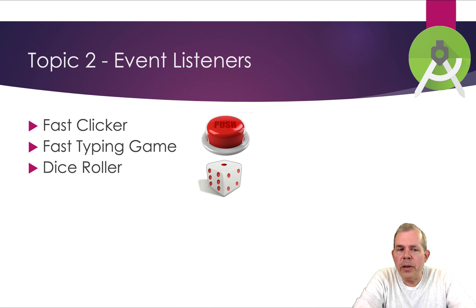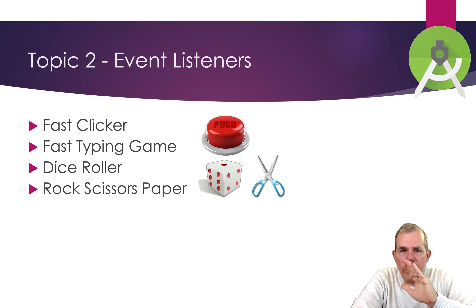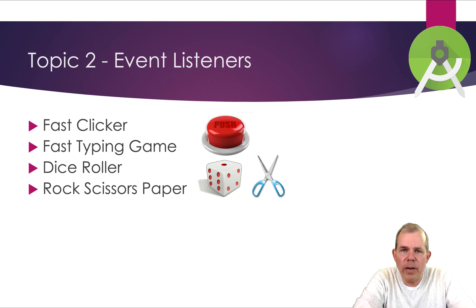We're also going to work with a program called Dice Roller. Dice Roller is going to work with graphics and random numbers as well. We'll pick a number from one to six and show the appropriate dice. We'll make it into a game using random numbers called Rock, Scissors, Paper, where a scissors, paper, or rock each can defeat one of the others. Rock, Scissors, Paper will use the computer to play a randomized opponent.